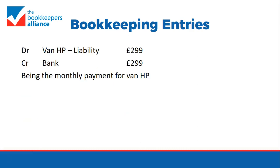Each month we have to do the entry: we debit the Van HP liability account for £299 for the monthly payment, and then credit the bank — if that's how he makes the payment — for each monthly payment.